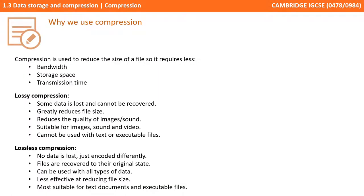So in summary, compression is used to reduce the size of a file. The impact of this is less bandwidth required, less storage is required, and we have a shorter transmission time. There are two main types of compression: lossy and lossless. With lossy, some data is permanently lost and cannot be recovered, but it greatly reduces the file size. It reduces the quality of image and sound, and is suitable for things such as multimedia images, sound and video. We can't use it for text or executable files where all the data needs to be restored. With lossless compression, no data is lost — it's just encoded in a more compressed format. The files can therefore be recovered to their original state. It can be used with all types of data, though overall it can be less effective at reducing the file size, and is therefore most suitable for text documents, executable files, and other files where all the original content must be restored.